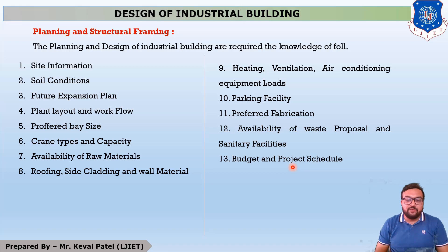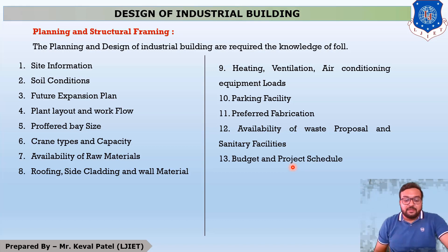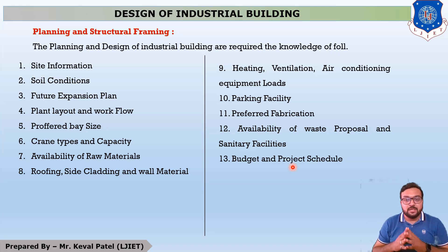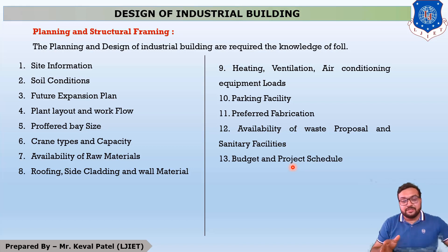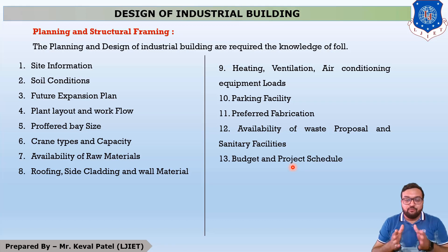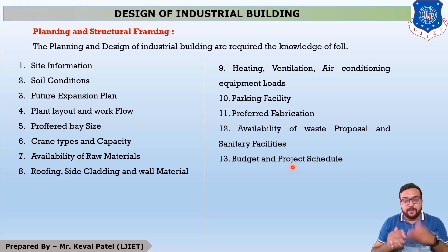All these things must be kept in mind whenever you are planning and doing structural framing of an industrial building. Next, which factors are considered while designing any industrial building? There are a number of factors to keep in mind: whether the industrial building is on a main road or far from it, whether raw material is available, and what the electricity and water supply facilities are — all these components are very important.